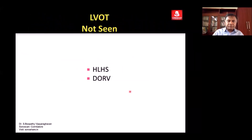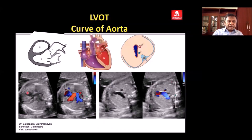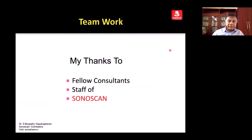When the LVOT is not seen, you are not able to identify it — it has an acute curve directed more posteriorly. When you see that, it is abnormal and you must think that it is a pulmonary artery: an acutely angularly curving pulmonary artery with branching. When you come to the 3VT you see only a single aorta with an absent pulmonary artery — that is the diagnosis of TGA. Thank you very much for your patience.